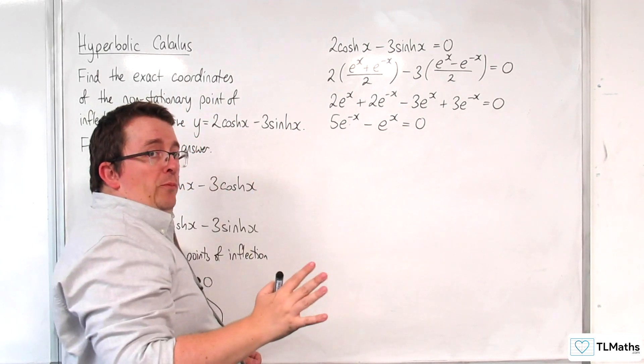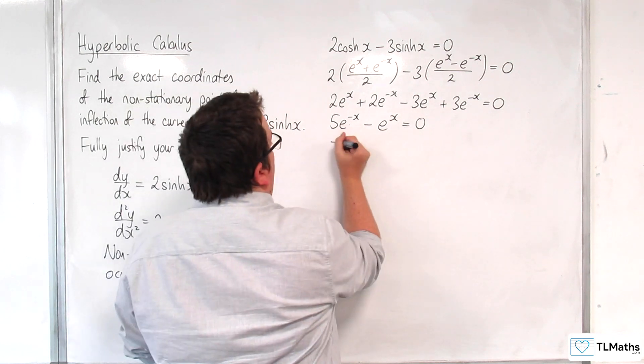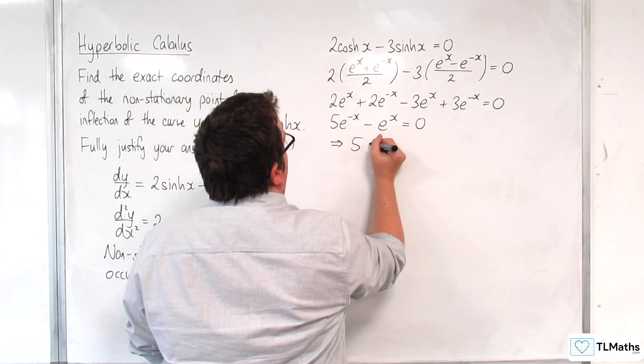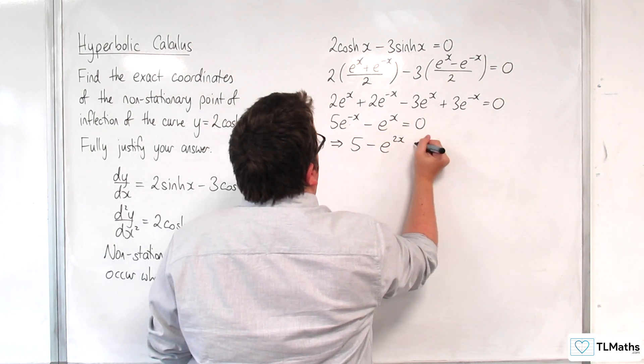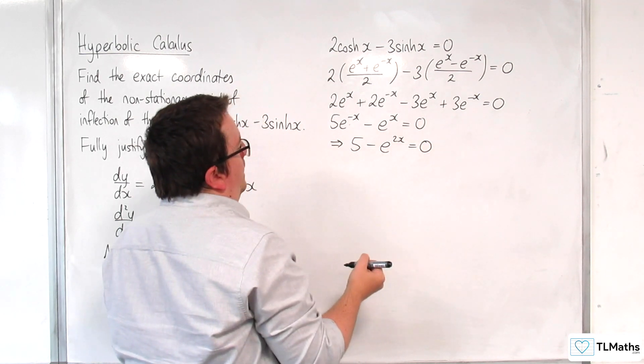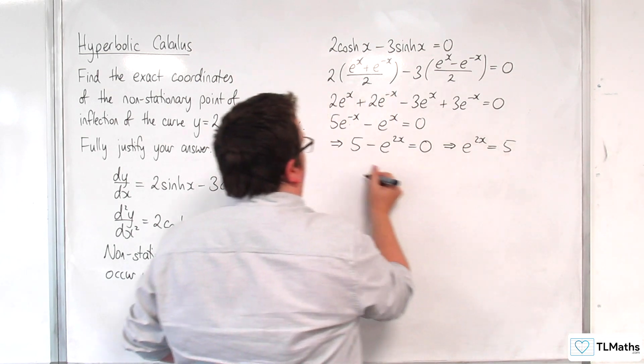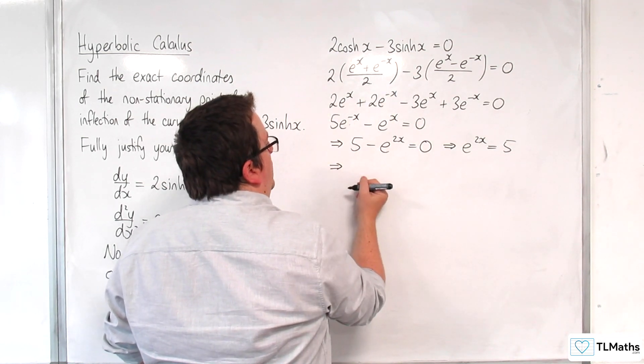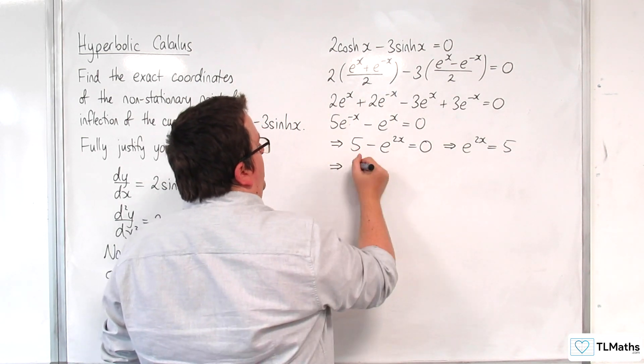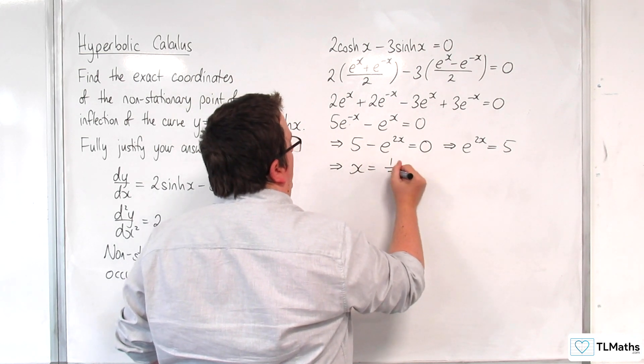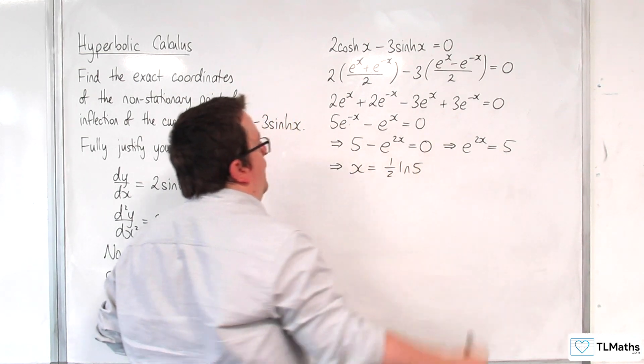So I'm going to multiply through by e^x. So I get 5 take away e^(2x) is equal to 0. So e^(2x) must be equal to 5. So logging both sides divided through by 2, x is going to have to be equal to ½ln(5).